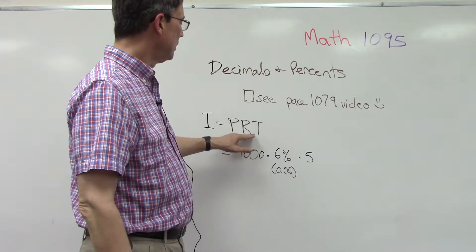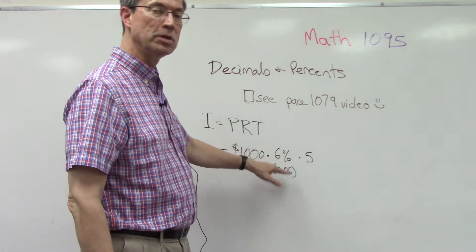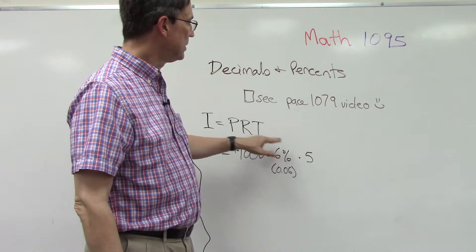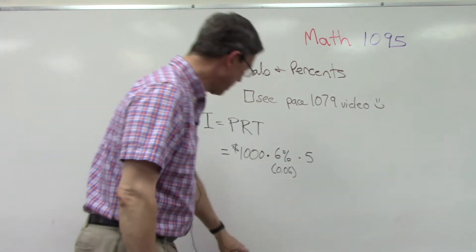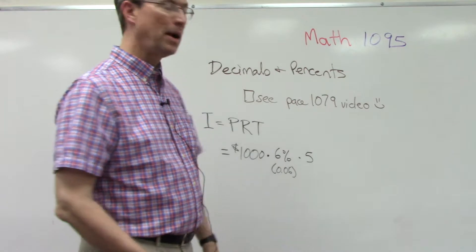Throughout the pace, the principal is the amount you're either borrowing or putting into the bank. The rate is a percent, and you always convert that to a decimal. The time is always in years.